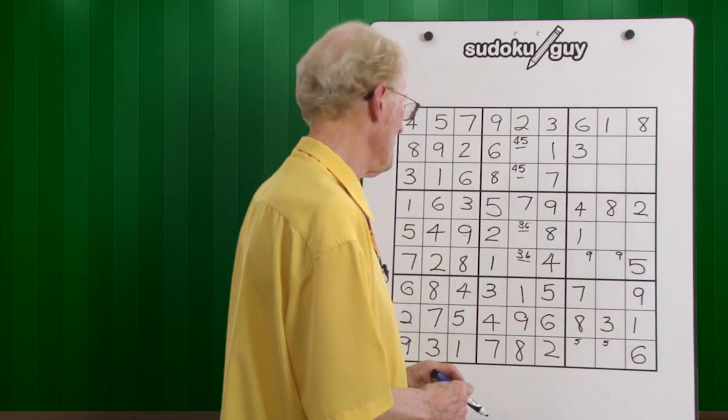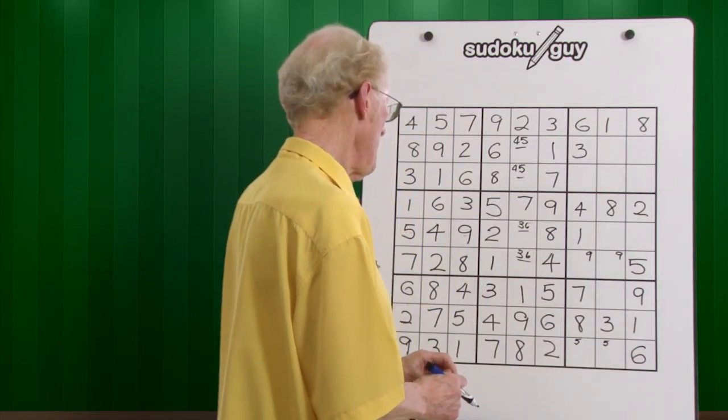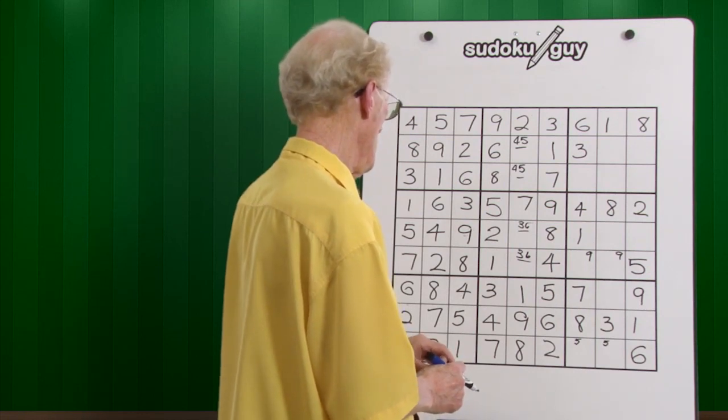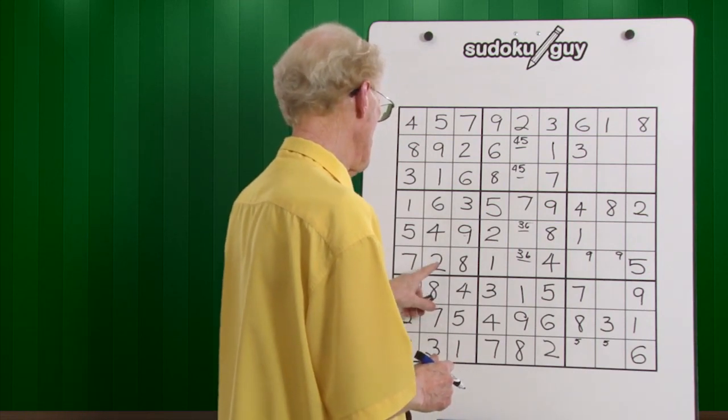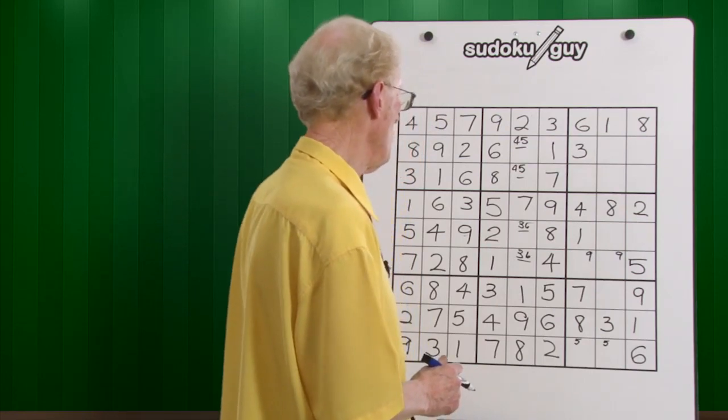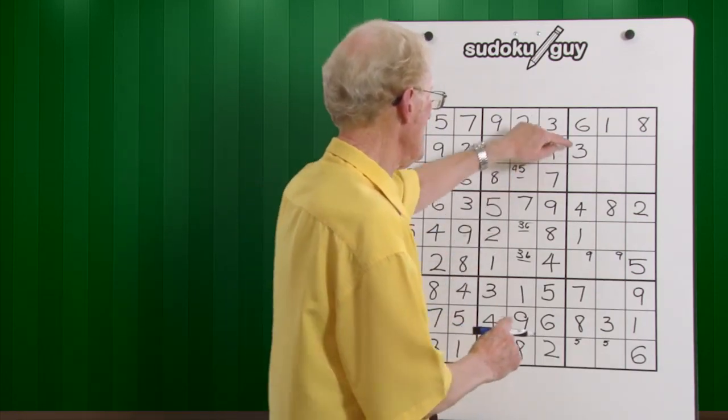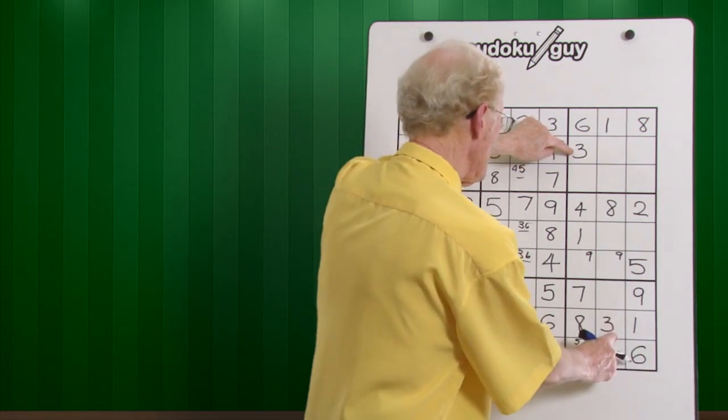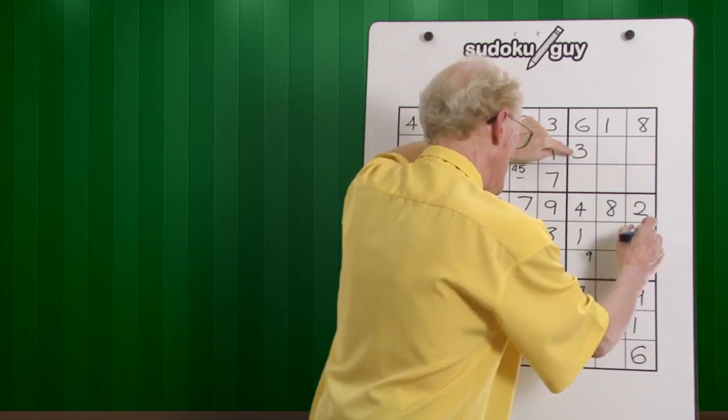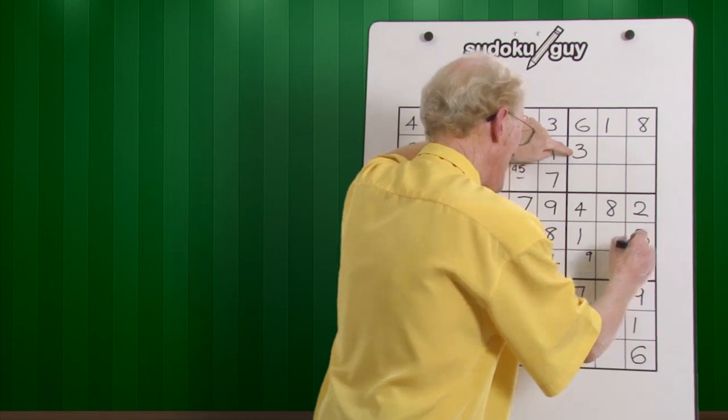Ones are all done. Twos, we only have twos. Well now, this is interesting. Two, two, two. We only have one, two. I think we'll go on to threes. Here's two. There's a three here on the left. Here's a three here in the center. The three has to go over here. Now look what the ramification of that is. Watch here closely.